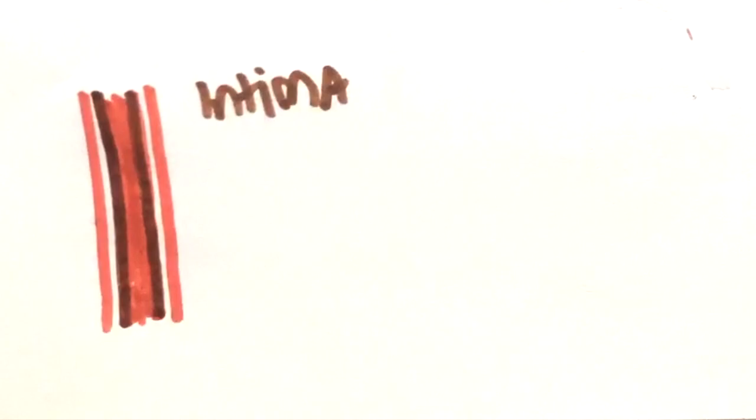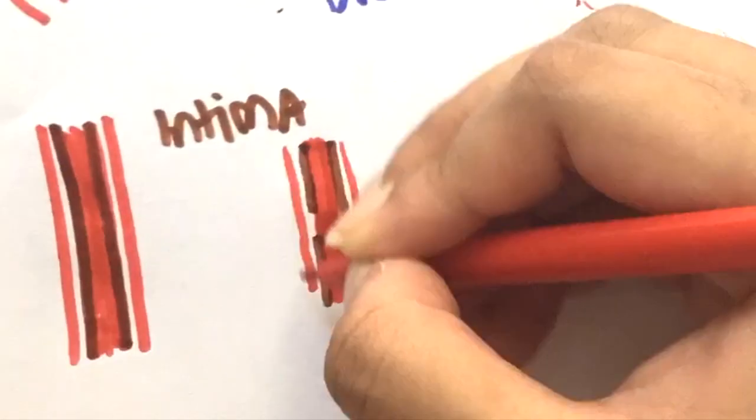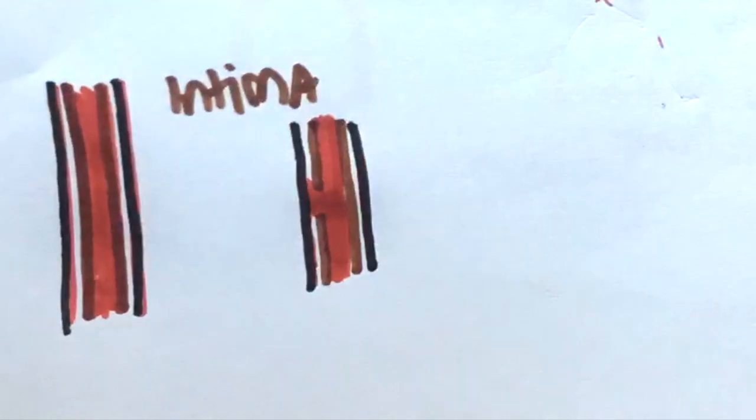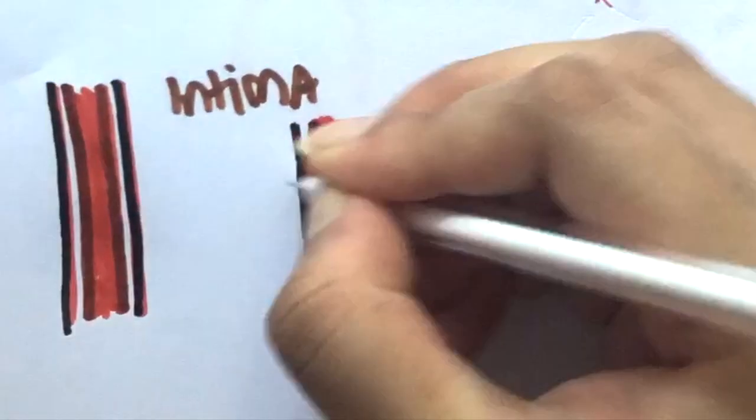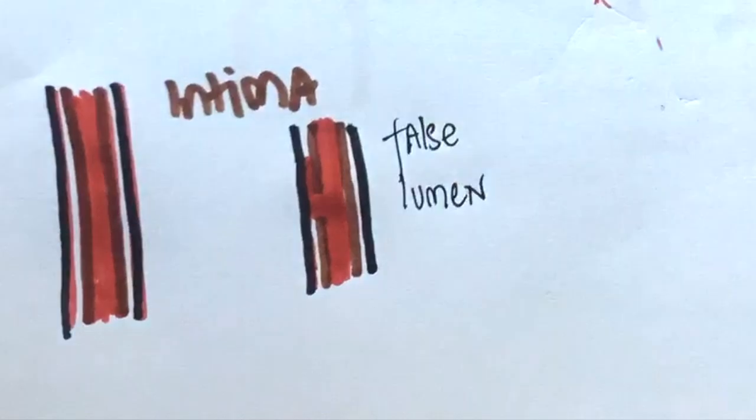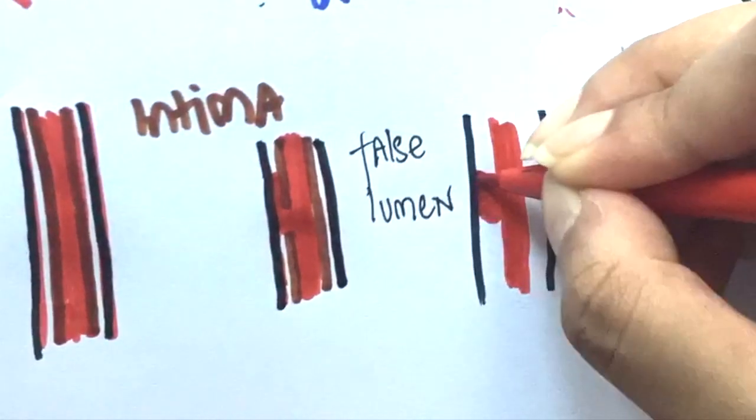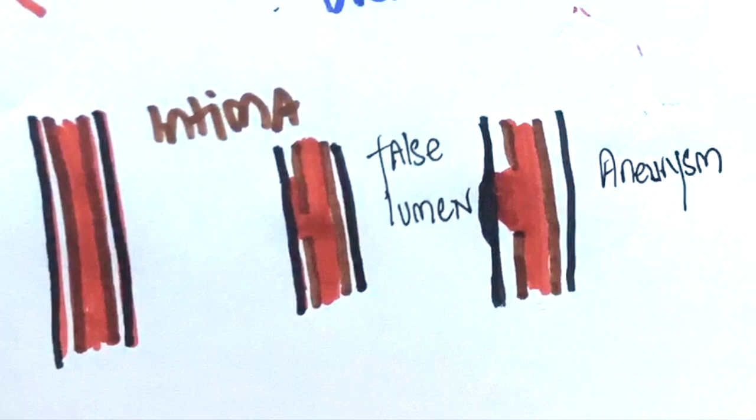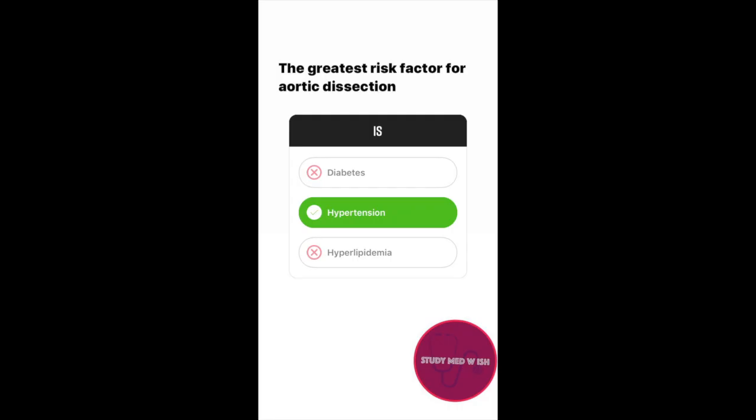Blood enters the medial layer of the aorta, leading to the formation of a false lumen. The accumulation of blood can proceed to form an aneurysm. As you can imagine, the blood must flow under immense pressure in order to break the intimal layer. This is why hypertension is the greatest risk factor for aortic dissection.